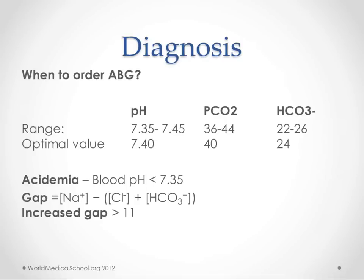So when do you order the ABG — the arterial blood gas — which is one of the most important measurements in diagnosing acidosis? Well, if you have any of these symptoms and don't know what's causing them, you might want to order it, or if you have reason to believe that one of the causes we're going to talk about is part of your patient's presentation.